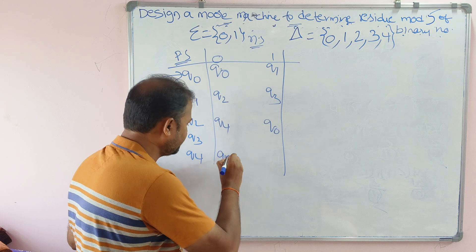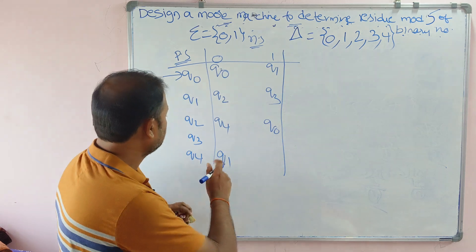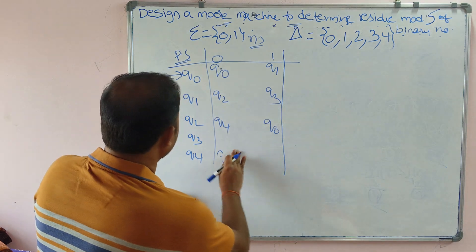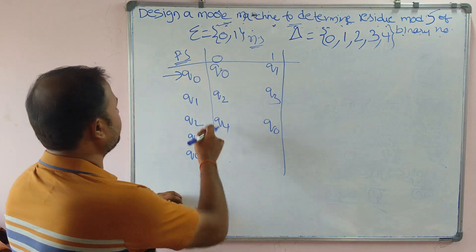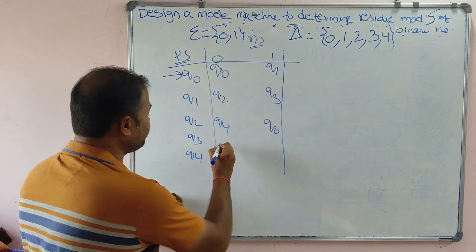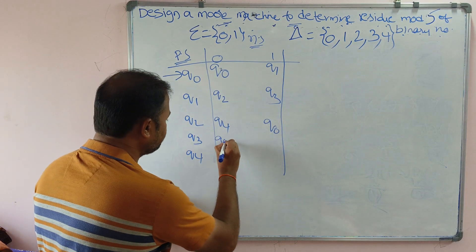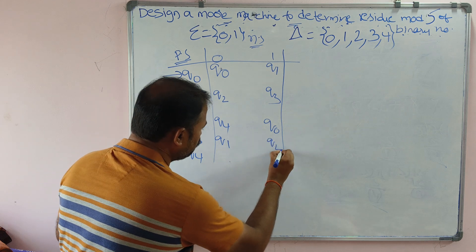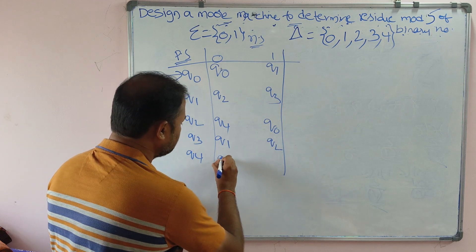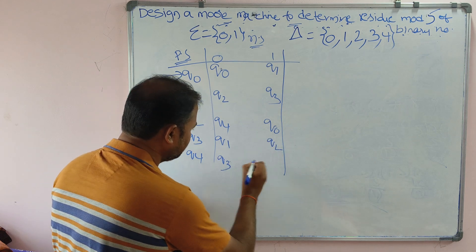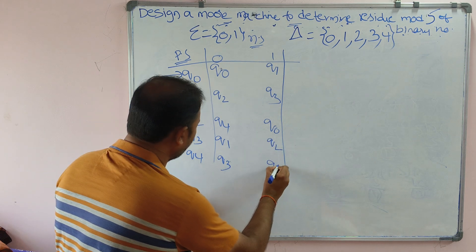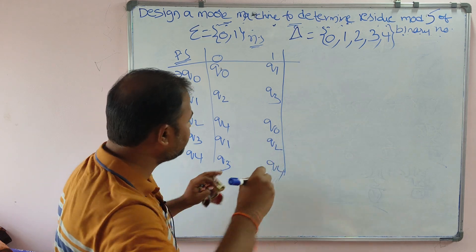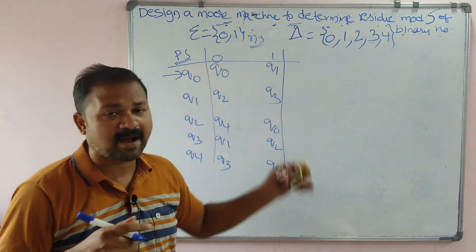q0 is the initial state. In a Moore machine, we don't have any final state, so there is no need to enclose states in a double circle — a circle means final state, and Moore machines don't have final states. We write the states q0, q1, q2, q3, q4 in sequence and fill the transition table.